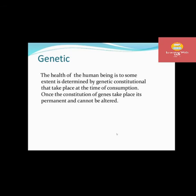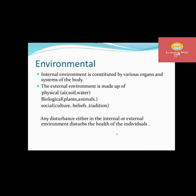Under genetic factors, the health of a human being is to some extent determined by genetic constitution that takes place at the time of conception. Once the constitution of genes takes place, it is permanent and cannot be altered — once a person receives genes from parents, they are for life. The internal environment is constituted by various organs and systems of the body. The external environment includes physical (air, soil, water), biological (plants, animals), and social (culture, beliefs, tradition) factors. Any disturbance in either the internal or external environment disturbs the health of the individual.